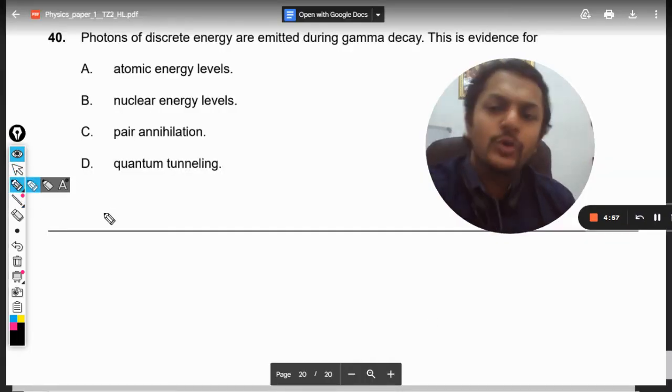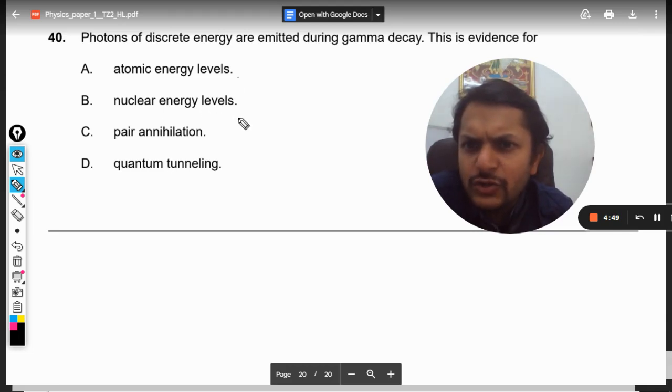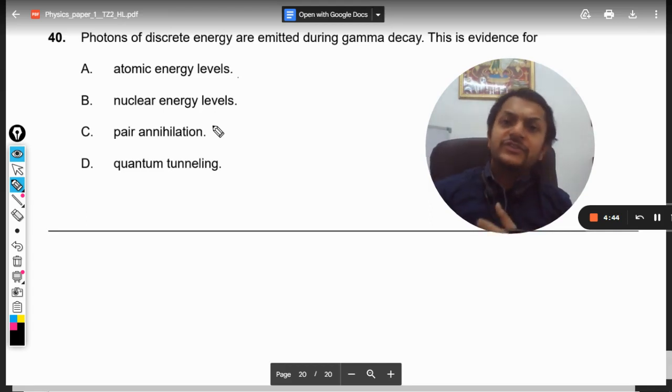What is there in this question? Photons of discrete energy are emitted during gamma decay. This is evidence for atomic energy levels, nuclear energy levels, pair annihilation, or quantum tunneling. Okay, my dear students, first of all...